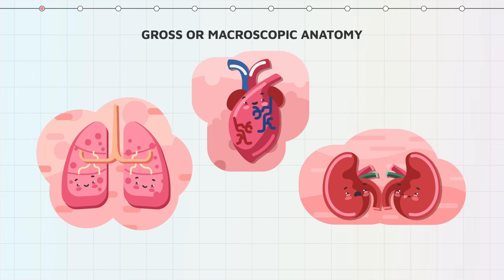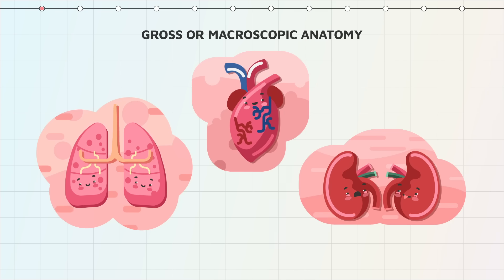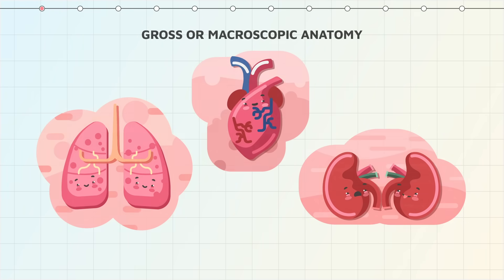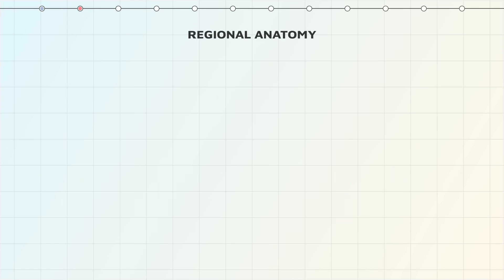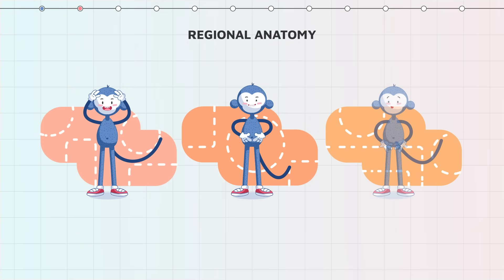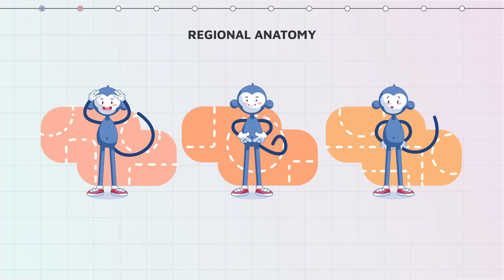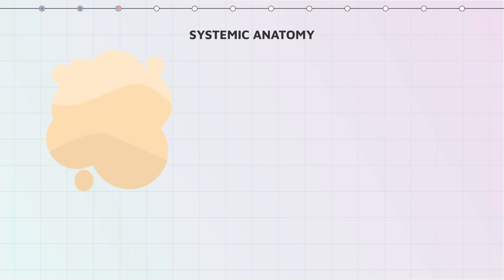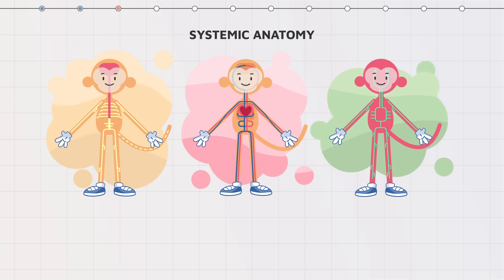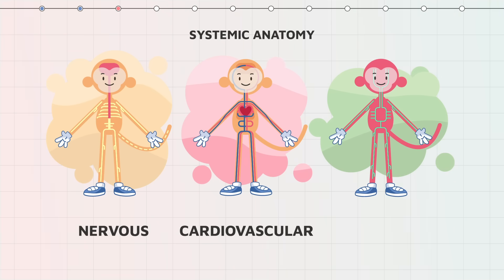We can approach the study of a structure in different ways: by the location of this structure in a system, or the location of this structure in a region. Regional anatomy reviews all the structures linked to a particular region of the body, such as the head, abdomen, or pelvis. Systemic anatomy studies anatomical structures as parts of a system, such as the nervous, cardiovascular, or lymphatic systems.